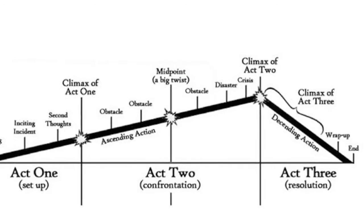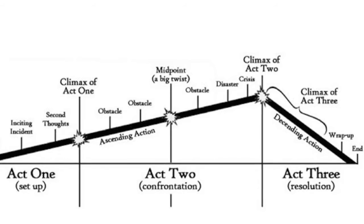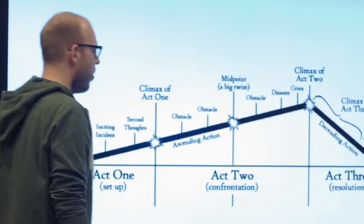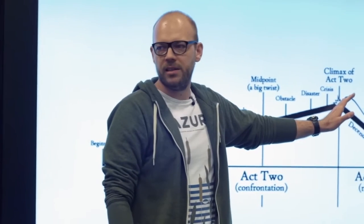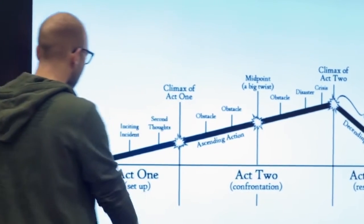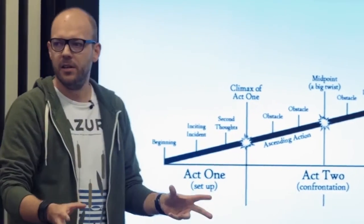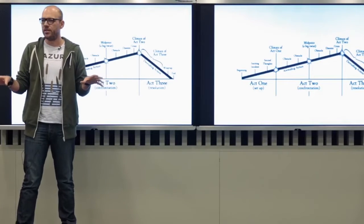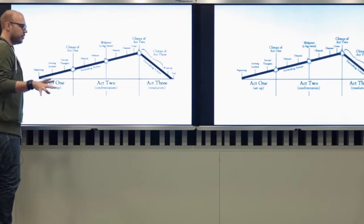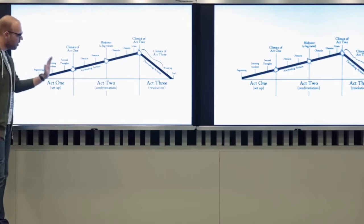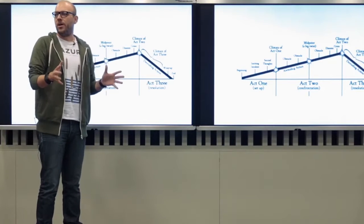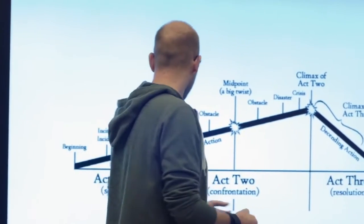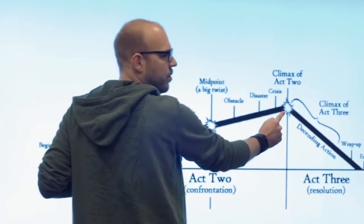Starting with the three-act structure: our job is to take the audience from act one to the climax of act two — which is basically where we resolve things. In a romantic comedy, the climax of act two is when they finally kiss. We start with the beginning, setting up the scene — 25 of us in a room in Budapest, each from different backgrounds — and then we have the inciting incident, which is the opening.